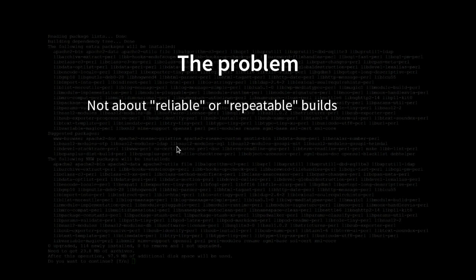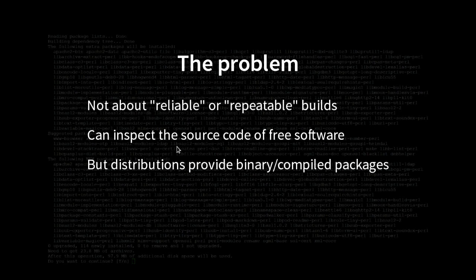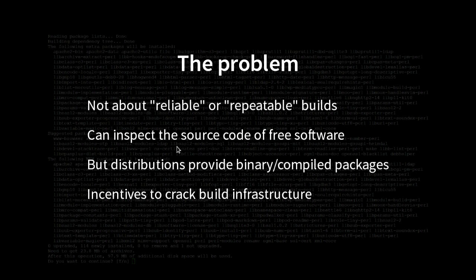What is the problem we're trying to solve? We aren't trying to solve the problem of reliable or repeatable builds — people use the term 'reproducible builds' to mean they can do a build and do it again and it still works, not reliant on the internet. That is not what this is solving. The real problem is: whilst we can inspect the source code of free software, most distributions provide binaries — you do 'apt-get install' and it installs a binary. This is a big problem for security because there are incentives to crack build infrastructure and to go after developers. You could break into a developer's machine if they upload software from their personal laptop, and that software could be compromised.